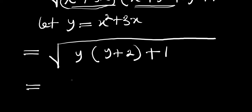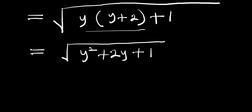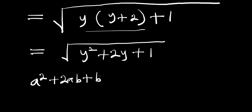Multiplying this out we get y squared plus 2y plus 1. Now the next thing is to consider the identity: a squared plus 2ab plus b squared equals a plus b, all squared.